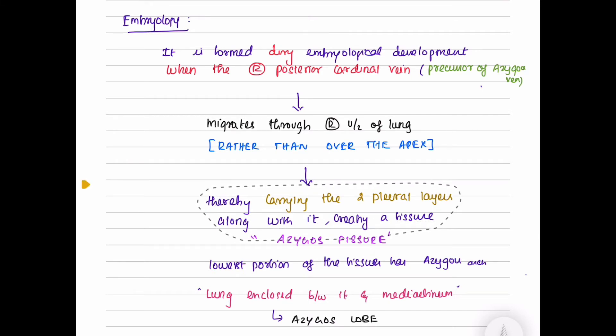The lowest portion of the fissure has Azygos arch and the lung enclosed between the fissure and the mediastinum is known as Azygos lobe.